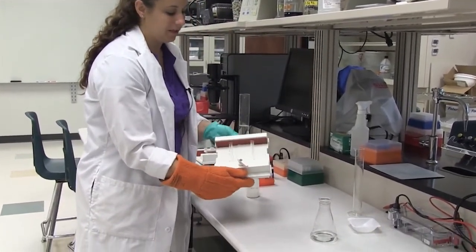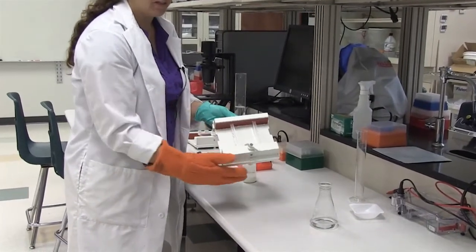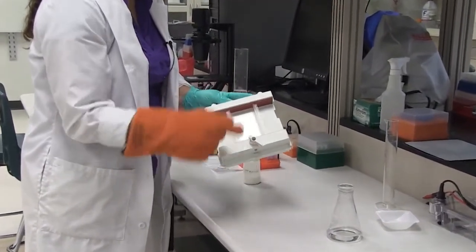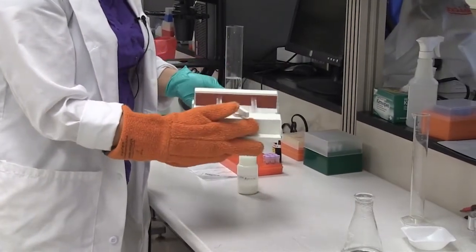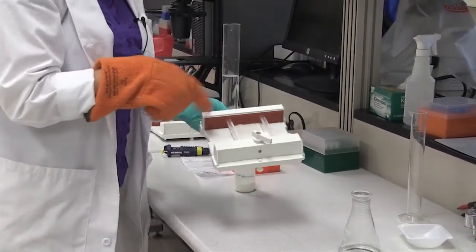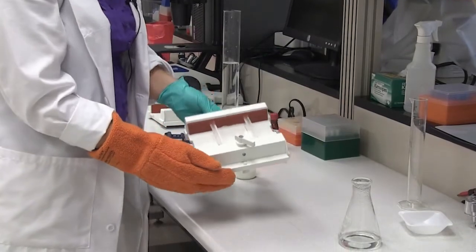The tray needs to be firmly secured between the two rubber dams so that it creates two barriers on the ends that you can pour your gel. If it is not secure in those rubber dams, the agarose will leak out and you will have to start this process all over again.